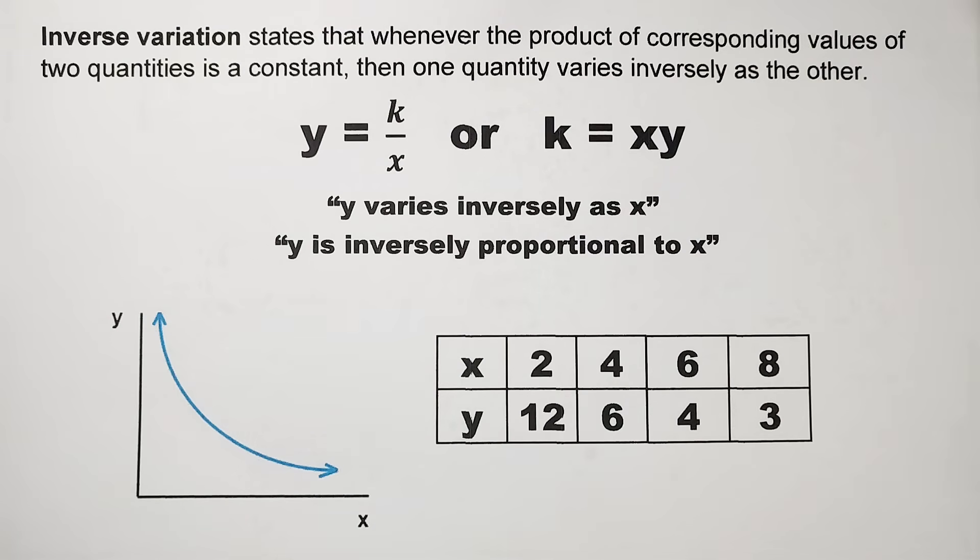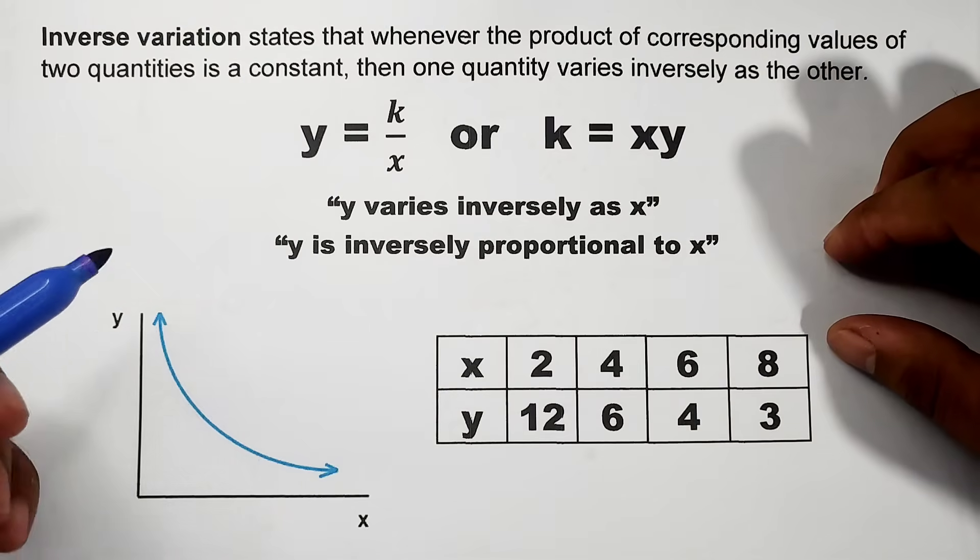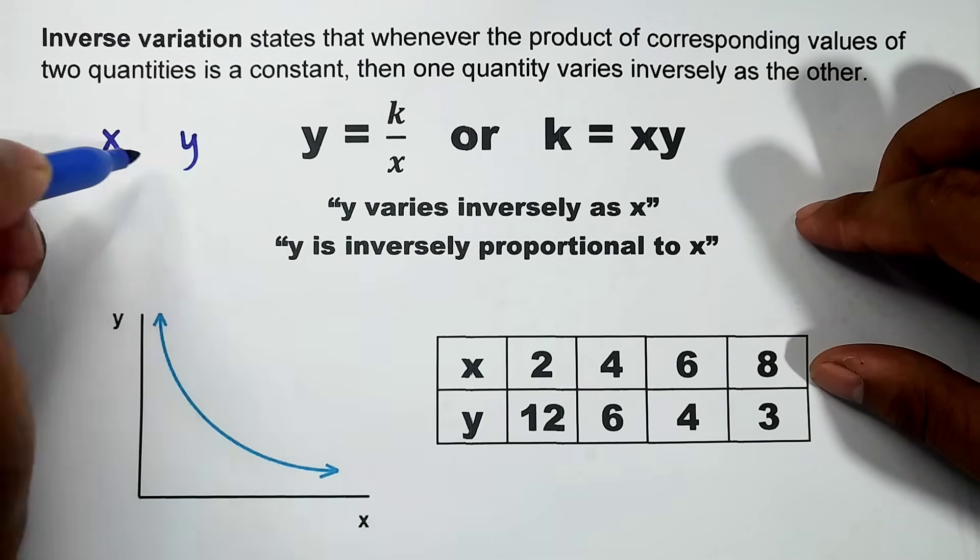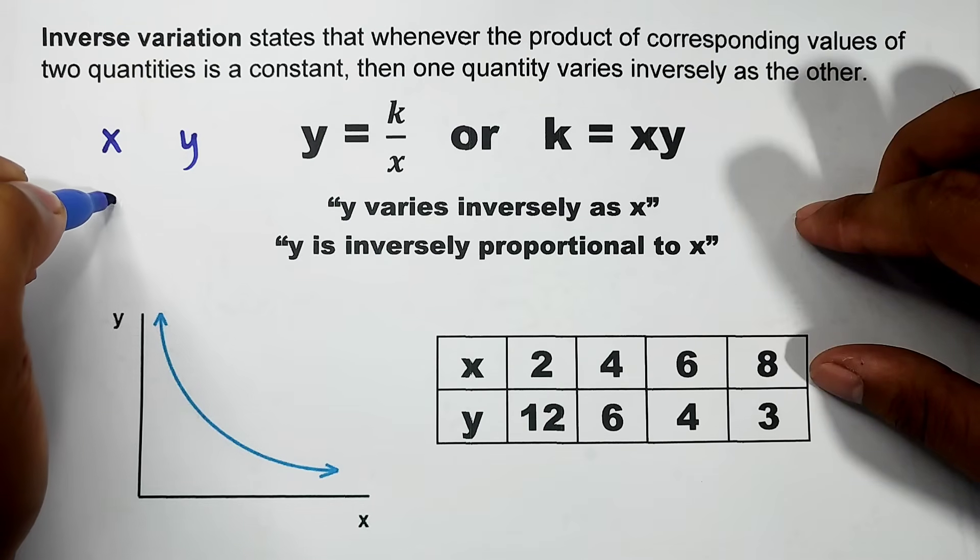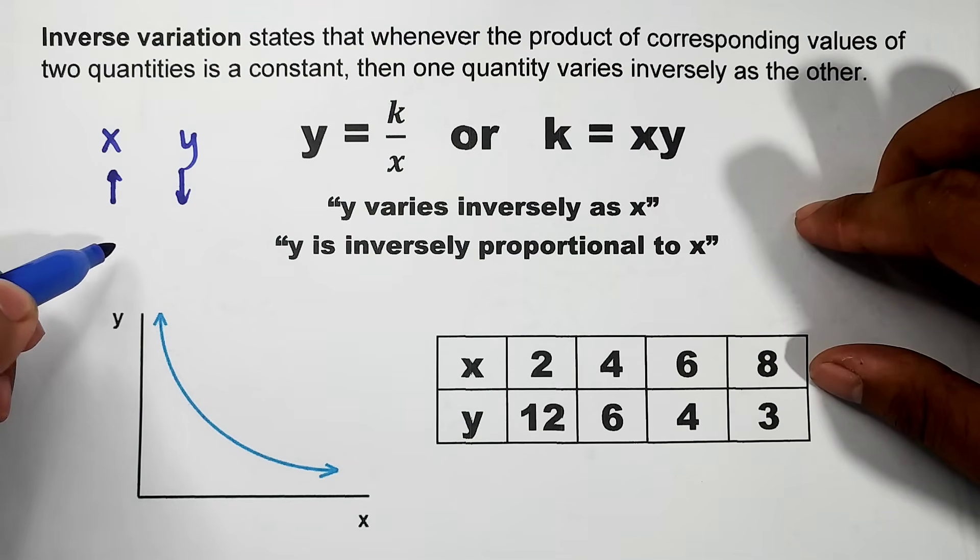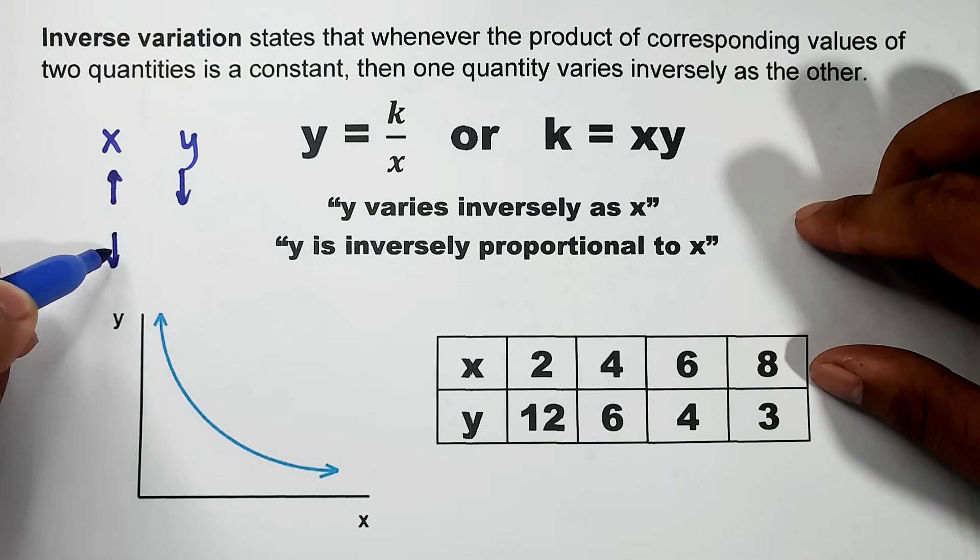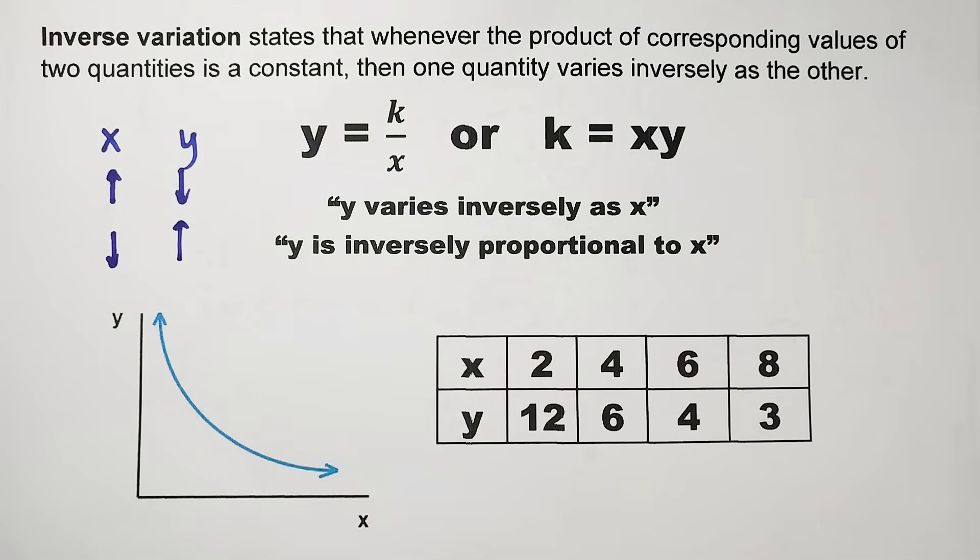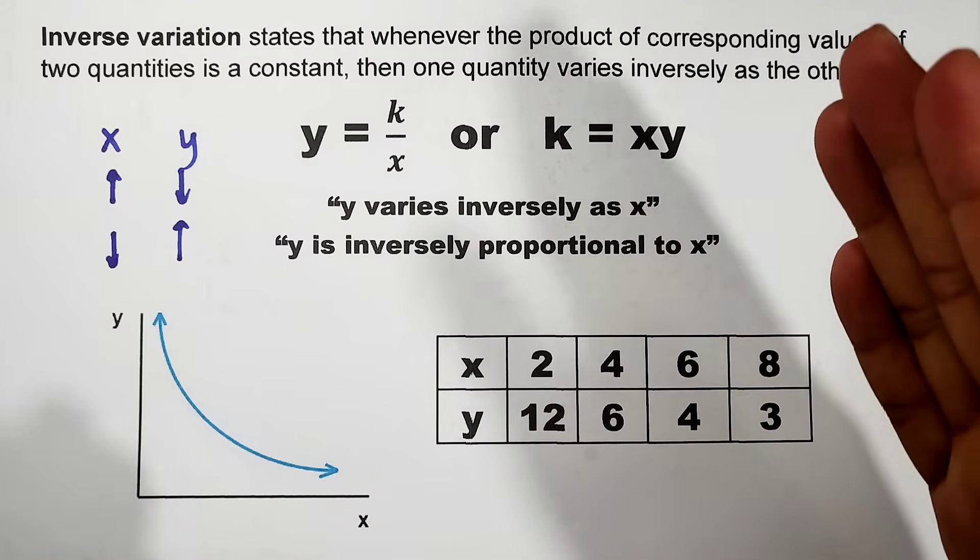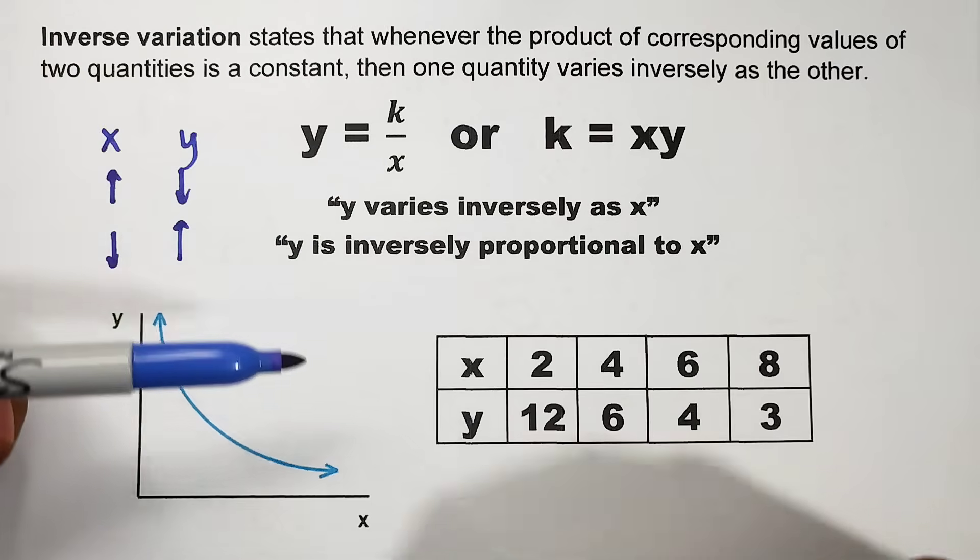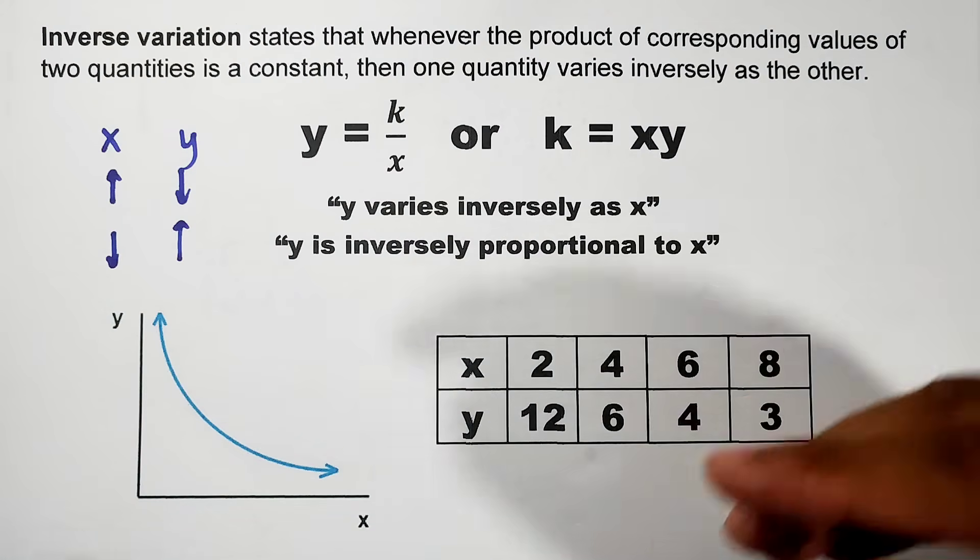The movement or behavior of the two variables here is that if you have quantity x and quantity y, when one value or x increases, the value of y decreases. And if the variable x decreases, the other variable tends to increase. That is what is happening in inverse variation in contrast to direct variation. Inverse variation: when one goes up, the other goes down. When one goes down, the other goes up. Imagine a seesaw.